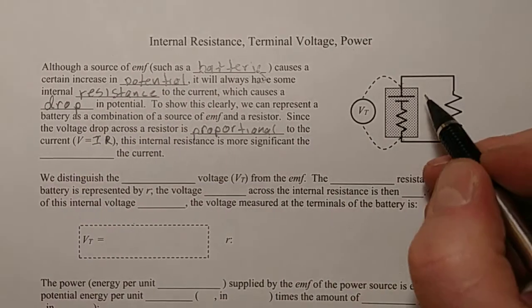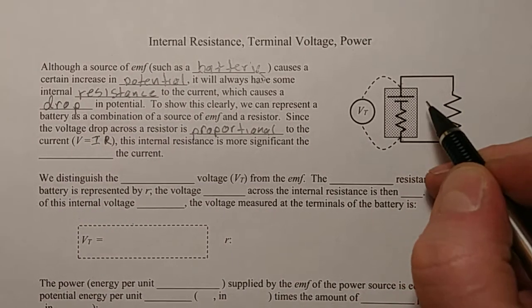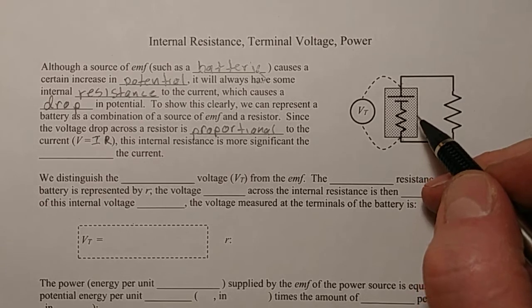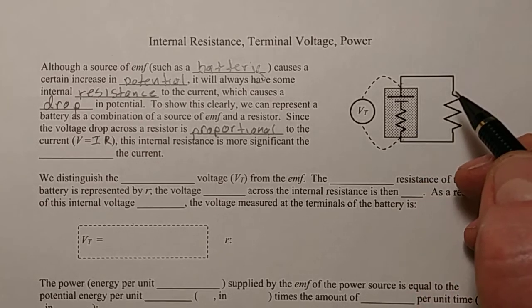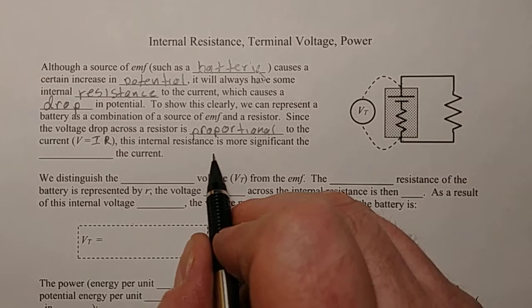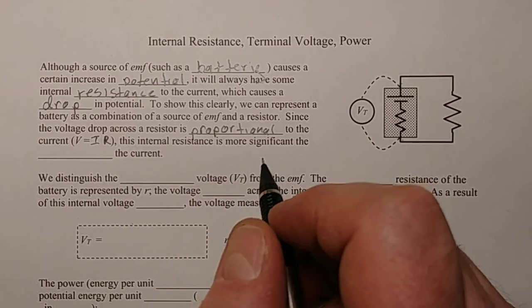So what happens is that the more current that's going through a circuit, the more current coming out of a battery, the more that voltage drop is going to be. So this internal resistance is more significant, the greater the current.